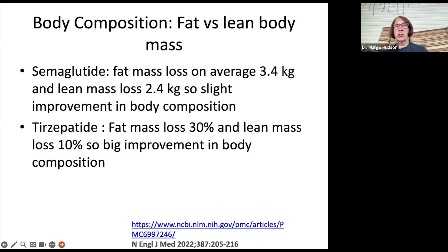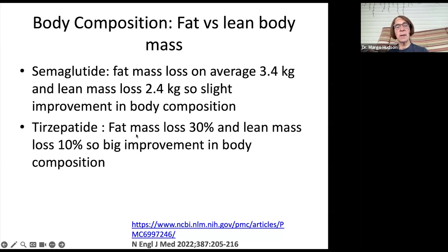What about body composition? BMI doesn't tell you whether you're losing fat mass or lean mass, and we don't want patients to lose muscle mass. With semaglutide, average fat loss was 3.4 kilograms compared to 2.4 kilograms of lean mass — more fat loss than muscle mass loss, but not a huge difference. Compared to tirzepatide, which showed 30% fat mass loss compared to only 10% lean mass loss — so less effect on muscle, which is what we want.